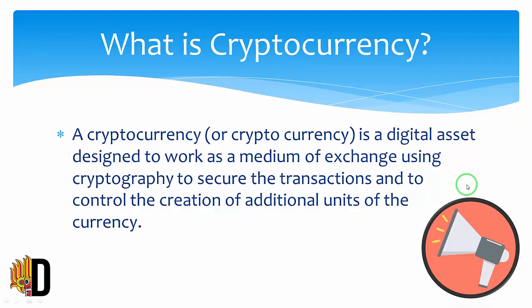Cryptocurrency is decentralized digital money based on blockchain technology. You may be familiar with the most popular versions, Bitcoin and Ethereum, but there are more than 5,000 different cryptocurrencies in circulation, according to CoinLaw.